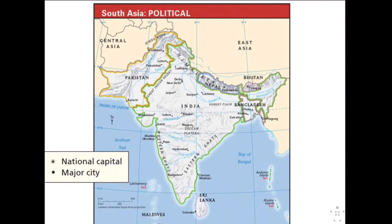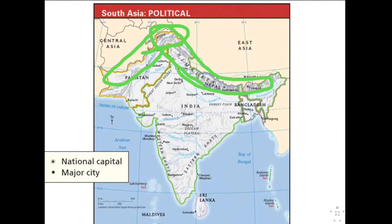South Asia is known as a subcontinent — a large, distinct landmass that is joined to a continent. It is separated from the rest of Asia by mountains, specifically the Himalayas and the Hindu Kush. It is known as a subcontinent because it used to be part of Africa before it broke away — hence the idea of a separate land.